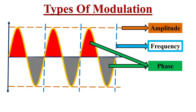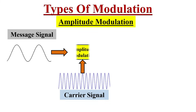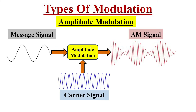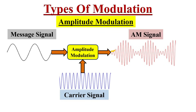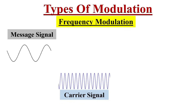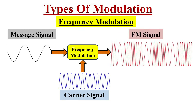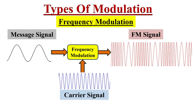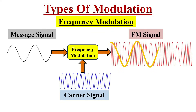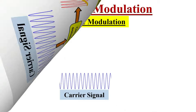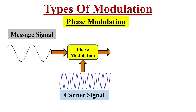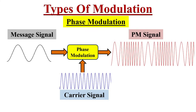Any signal — for example a sine wave — has three basic properties: amplitude, frequency, and phase. In modulation, one of these properties of the carrier signal is varied in accordance with the message signal. In amplitude modulation, the amplitude of the carrier wave varies according to the message signal — the shape of the high frequency carrier wave changes in accordance with the message signal. In frequency modulation, the frequency of the carrier wave varies according to the message signal. With an increase in the amplitude of the message signal the frequency of the modulated signal increases, and with a reduction in amplitude the frequency decreases. In phase modulation, the phase of the carrier wave varies according to the message signal.